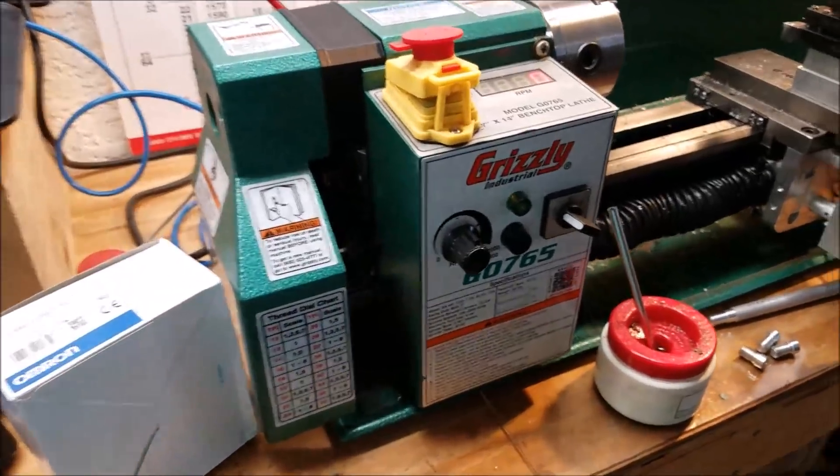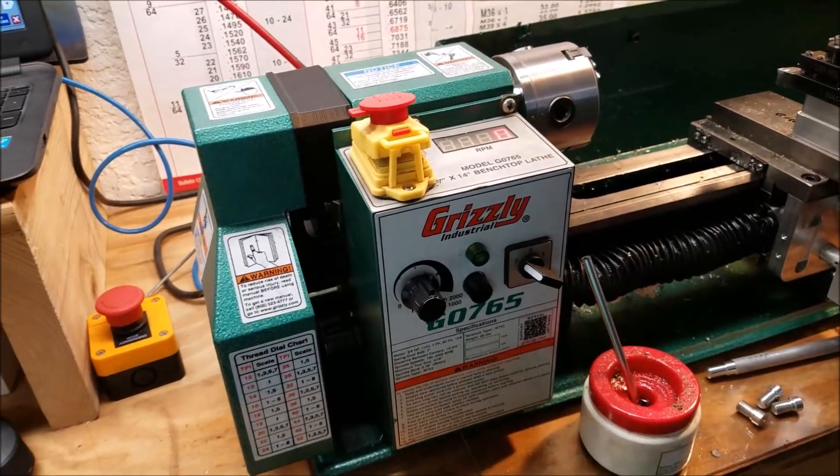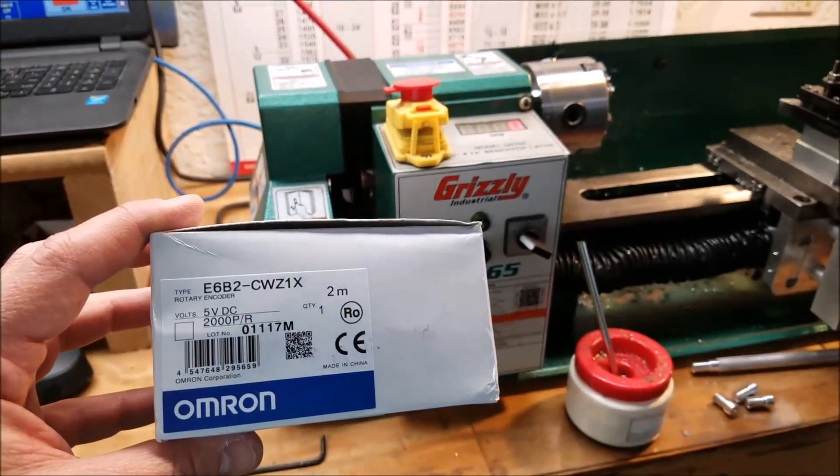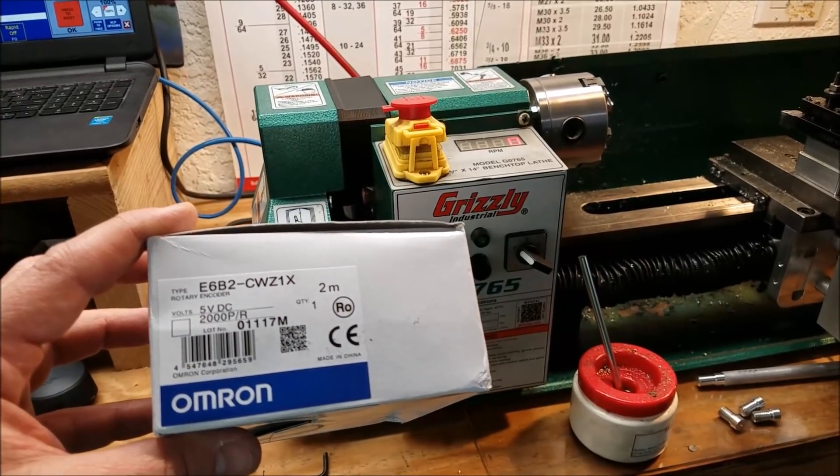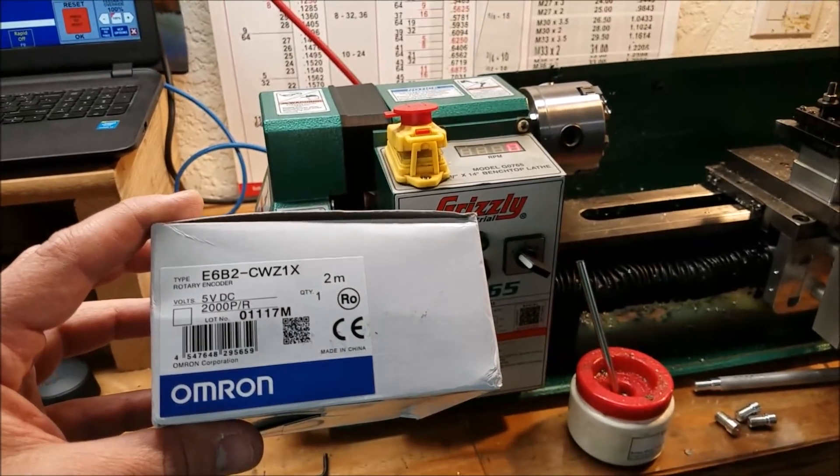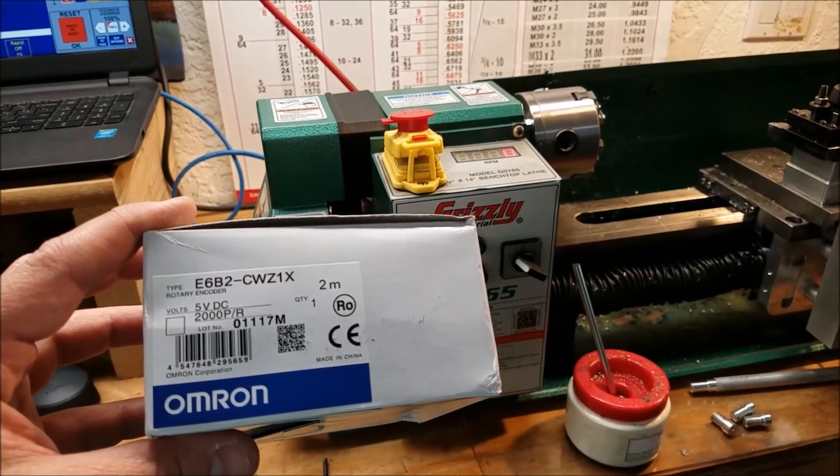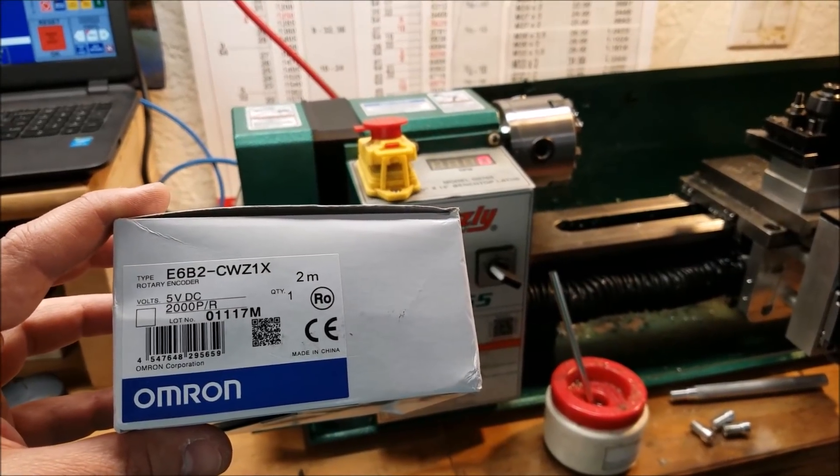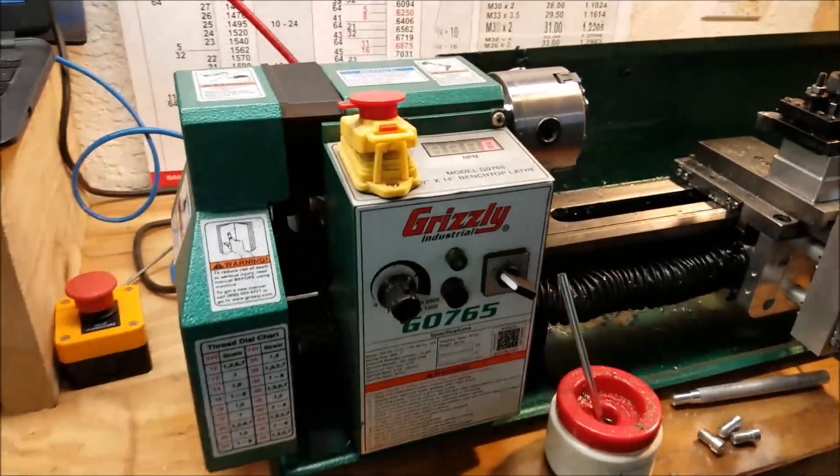This worked pretty good. The Tamagawa encoder is a really good encoder, but I want to go with one of these Omron encoders because they are inexpensive, they're easy to find on eBay, and I think that's probably the type of encoder that a lot of people are going to gravitate towards just because of their price.